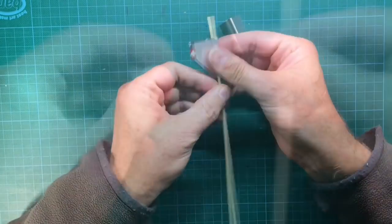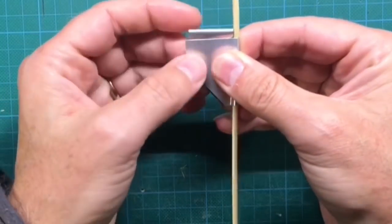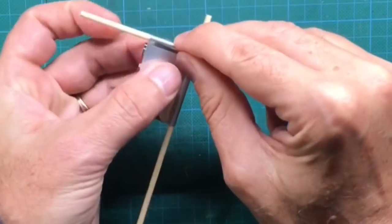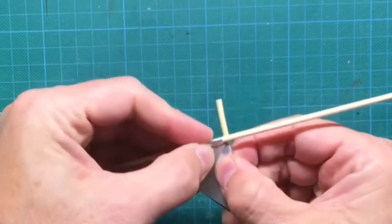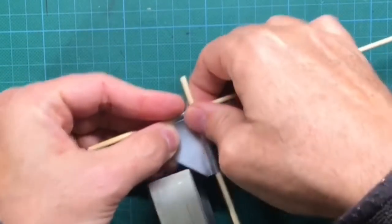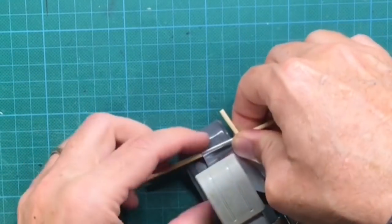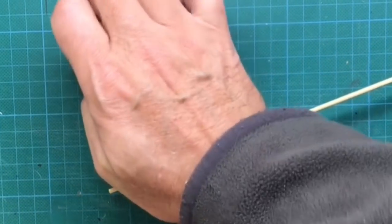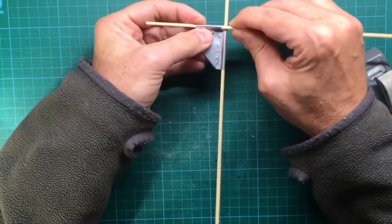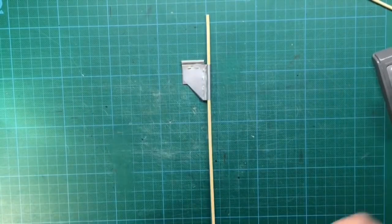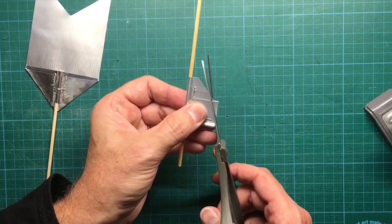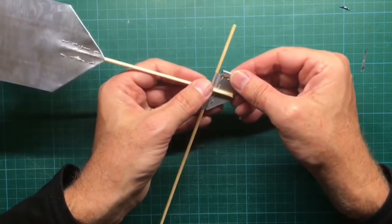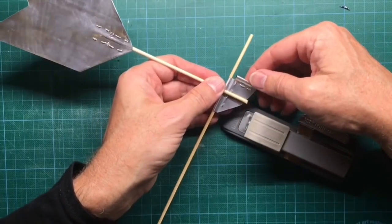Place both parts into each other to form the T-connector and then fix this construction with the stapler. Remove overlapping aluminum pieces with scissors and that's already everything about the T-connector.